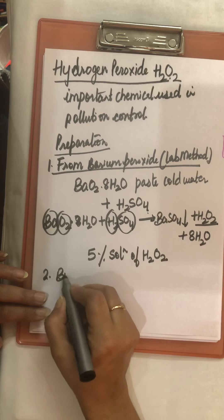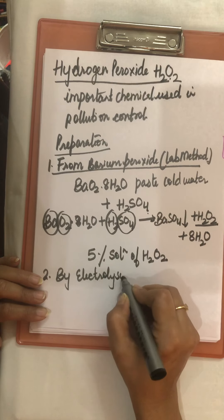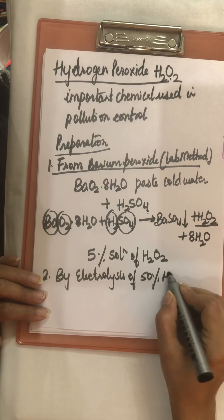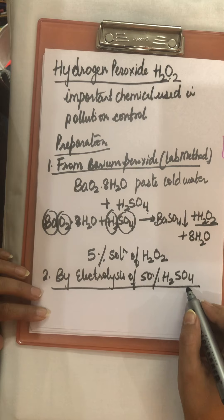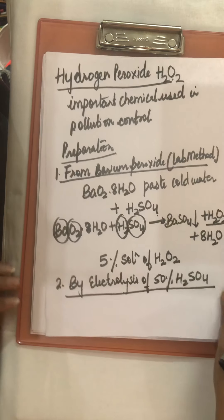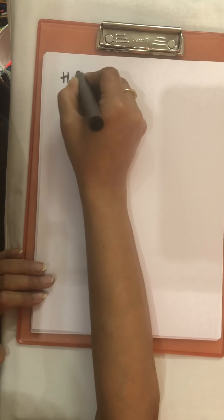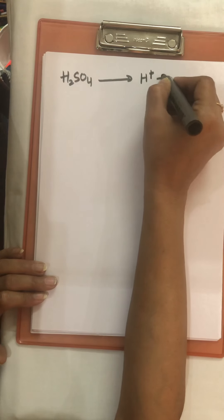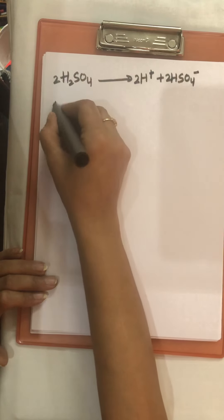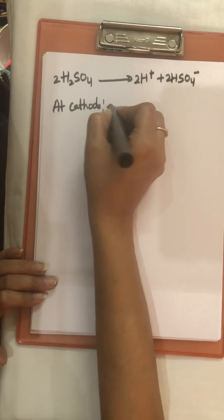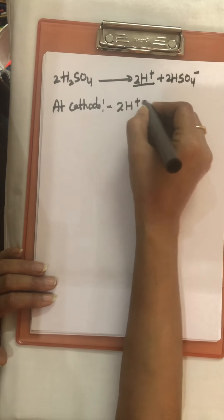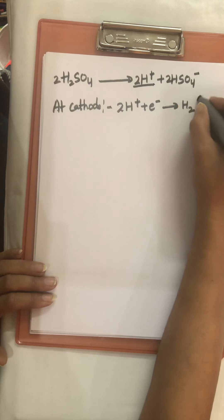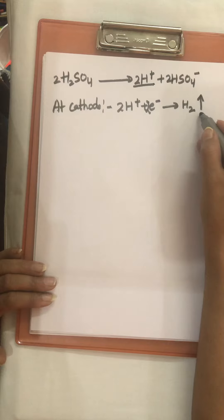The second method is by electrolysis of 50% H₂SO₄. If we take sulfuric acid and do its electrolysis, then also we will get H₂O₂. When we do electrolysis of H₂SO₄, we get H⁺ ions and bisulfate ions. At the cathode, the positive H⁺ ions go toward it and gain electrons to form hydrogen gas, which evolves at the cathode.